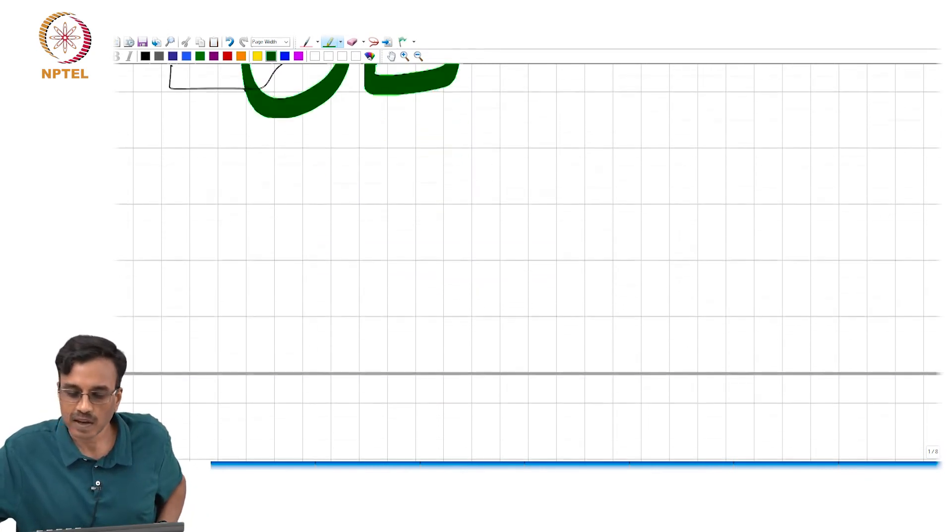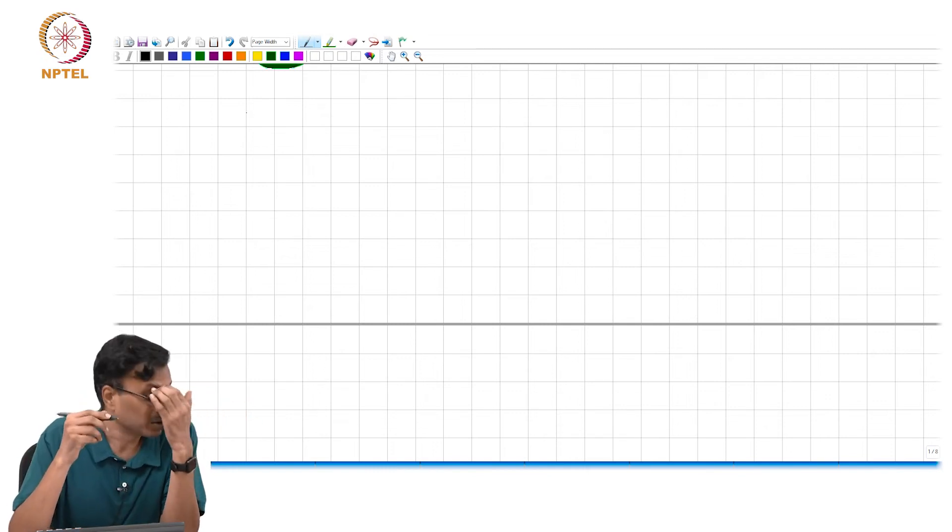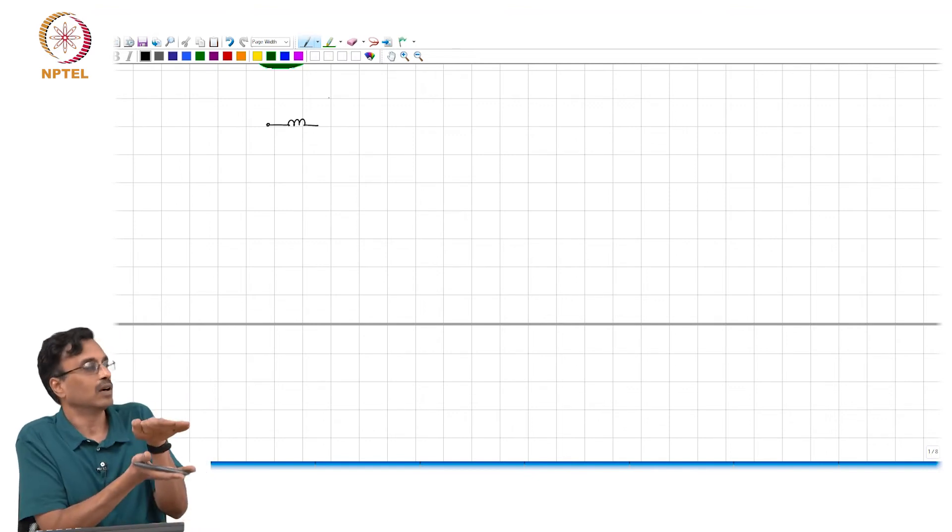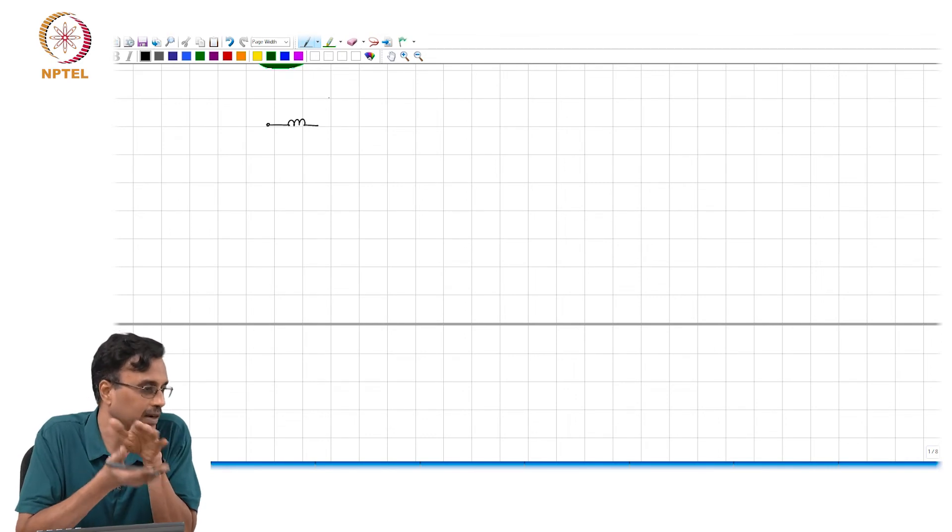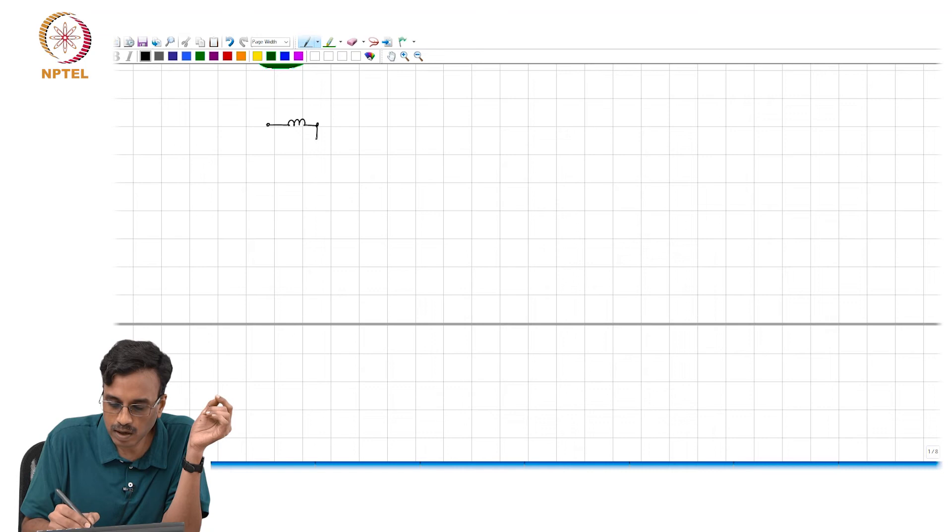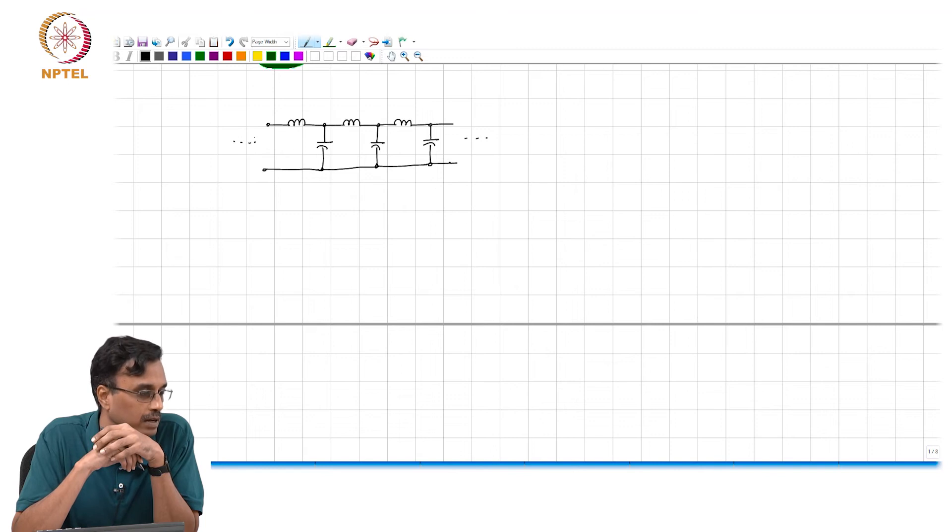Our first order of business is to understand what the cable does. I am sure you have seen most of this in EM, but I am just going to quickly go over this stuff. A coaxial cable or a parallel plate system with two conductors separated by some kind of dielectric can be modeled by a series of LC networks.